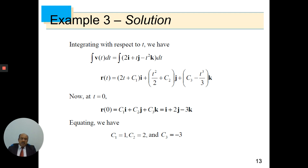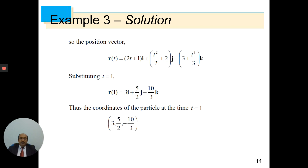Substituting t = 0, we obtain r(0) = c₁i + c₂j + c₃k, which must equal the initial condition i + 2j − 3k. Equating corresponding components gives c₁ = 1, c₂ = 2, and c₃ = −3. Substituting t = 1 into the position vector gives the coordinates of the particle at t = 1 as (3, 5/2, −10/3).